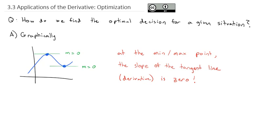That's going to be what we want to find in order to answer these optimization problems. What we're going to do is set the derivative equal to 0 to find the optimal point.